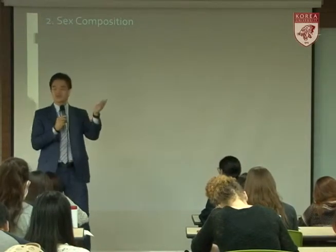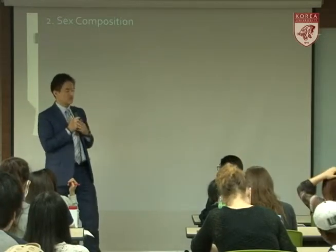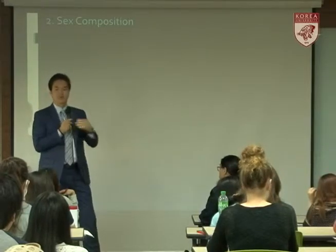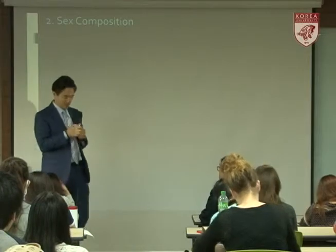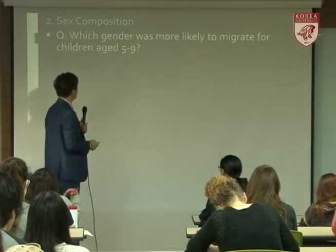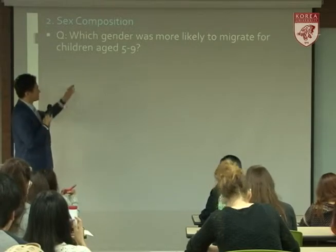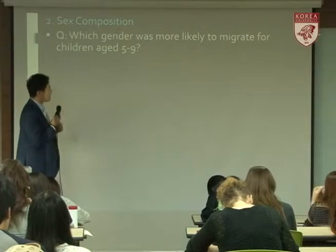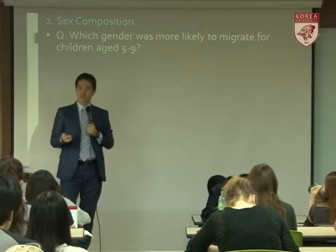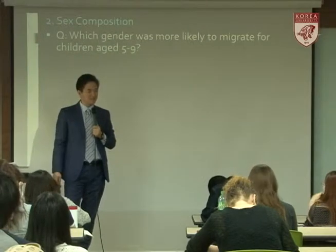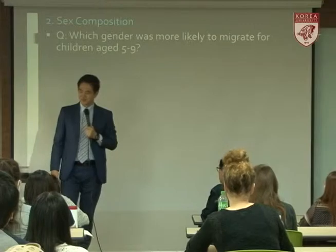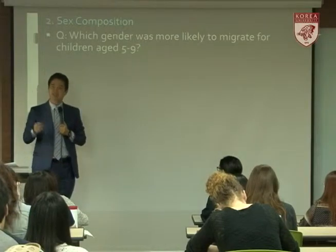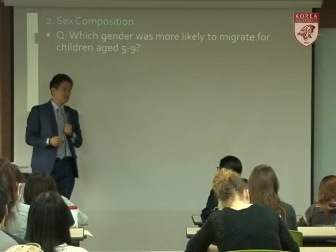Sex composition: in any given country experiencing rapid urbanization, which gender is more likely to migrate — male or female? Male. Same thing happened in Korea. More specifically, for children aged 5 to 9, in the 1960s, 70s, and even 1980s, males were more likely to migrate.